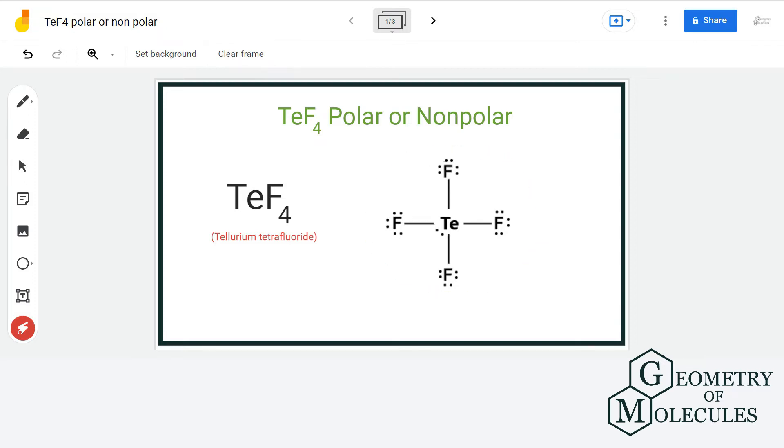In this case, the central atom tellurium is forming four single bonds with four fluorine atoms. Besides that, tellurium also has a lone pair of electrons here which doesn't take part in the bond formation.